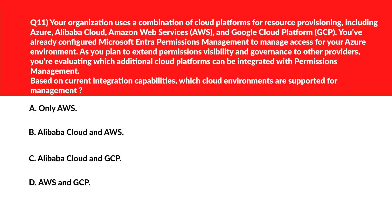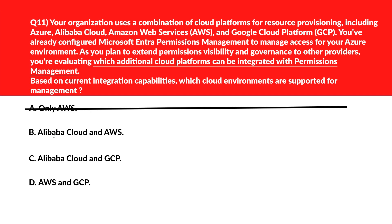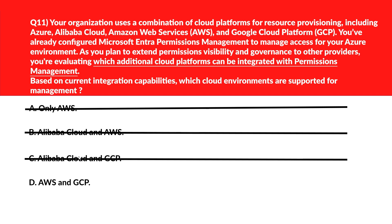Let's tackle this question. Looking at option A, it says only AWS — but AWS only excludes GCP, and we're looking for more cloud vendors to be supported. Option B and C are definitely out because both contain Alibaba Cloud, which is not supported.